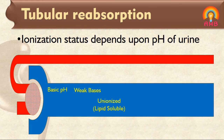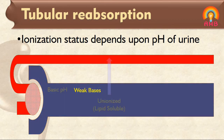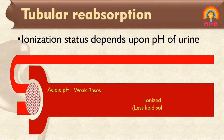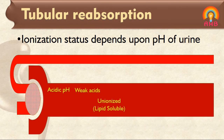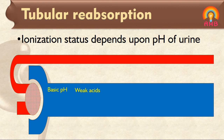For example, weak bases remain unionized or more lipid soluble at basic pH and are easily reabsorbed into the circulation, while they ionize more and become less lipid soluble in acidic urine and are less reabsorbed and eliminated through the urine easily. Similarly, weak acids remain unionized or more lipid soluble at acidic pH and are easily reabsorbed, while they ionize more at basic pH and remain in the urine for elimination in higher concentration.